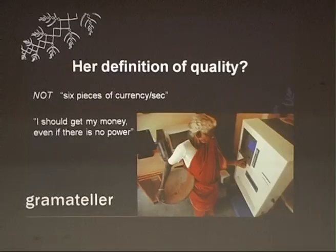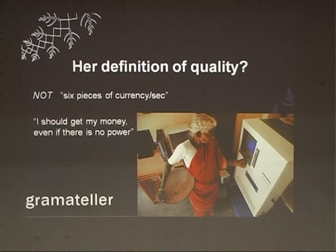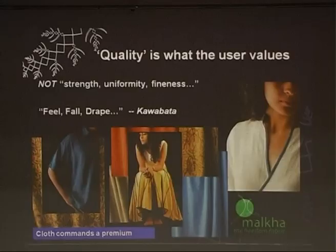To give an instance: when we started working on the ATM, people asked about dispensation speed — almost the single criterion on which people judged how good an ATM was. Two notes per second? Three? Last month somebody launched something with six notes per second. But we found that for our target market it hardly matters how many pieces of currency are delivered every second. If I ask my customer what defines a good quality ATM, she would say: I must get my money regardless of whether there is power or not. That was the quality criterion central to our design.